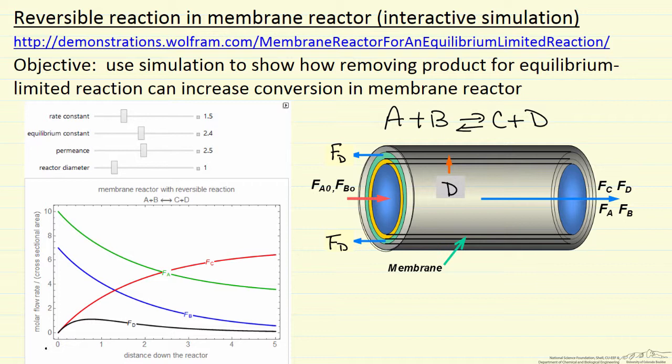If we can preferentially remove D through a membrane into an annular region, then we're going to push the equilibrium to the right and get a higher conversion of A and B, and therefore a higher flow rate of C leaving the reactor.